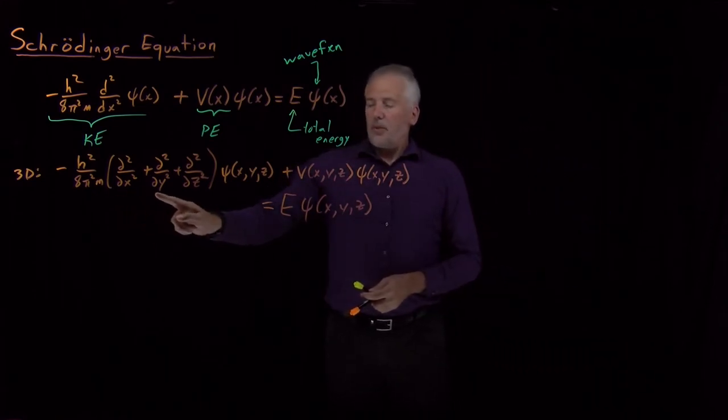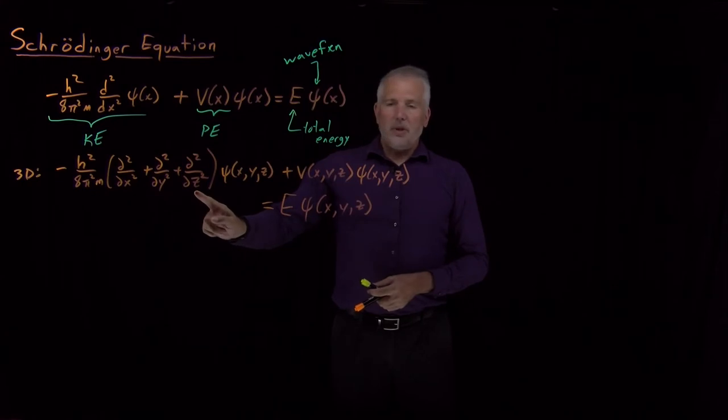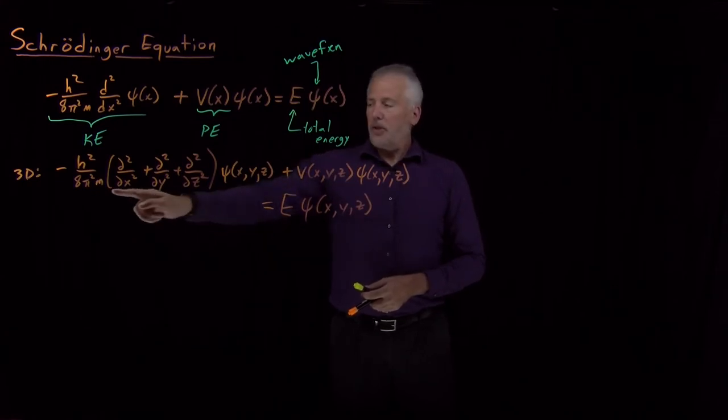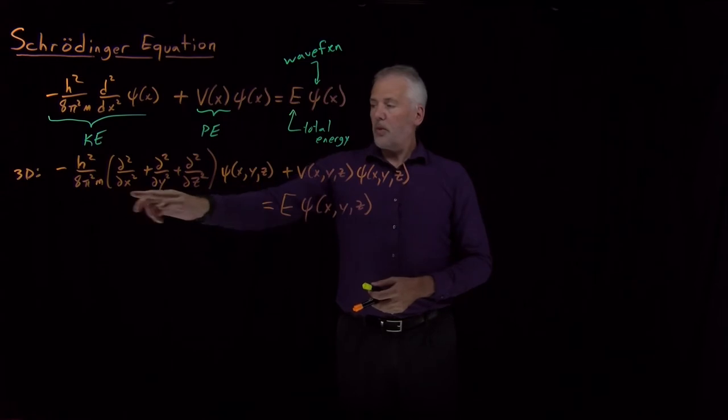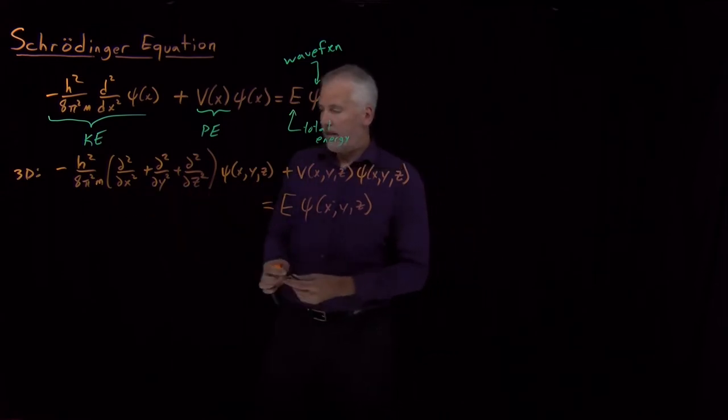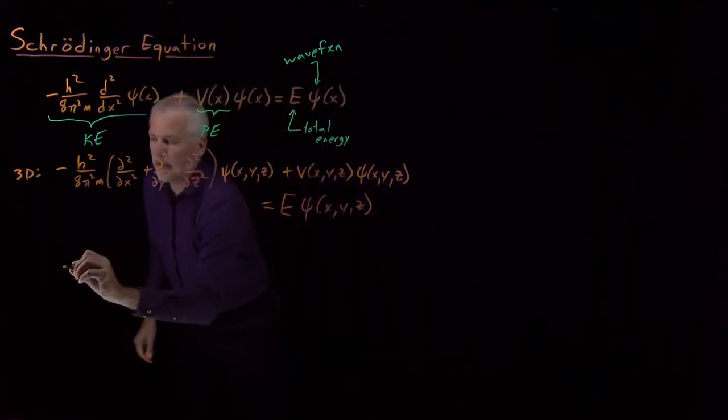This term—d²/dx² plus d²/dy² plus d²/dz²—may seem familiar from Calculus 3. That quantity is called the Laplacian, and we have a shorthand form that we can use to write the Laplacian.